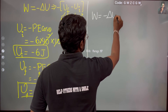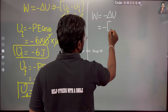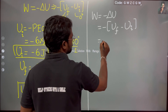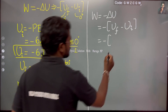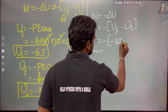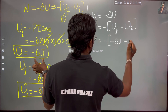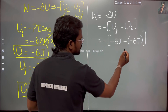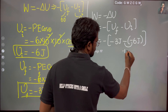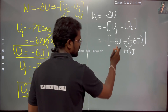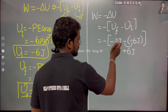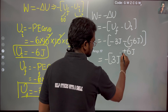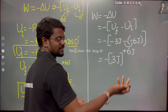Work done is the negative of change in potential energy, so negative of (final minus initial). Final potential energy: cos 60° is 1/2, so minus 7 plus 7 cancel, giving minus 3 joules. Initial potential energy is minus 6 joules. So work = minus (minus 3 minus (minus 6)) = minus 3 plus 6 = plus 3 joules.